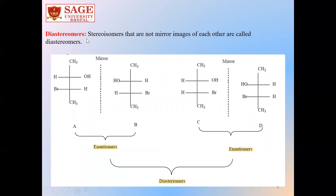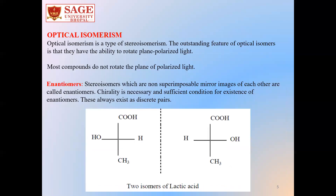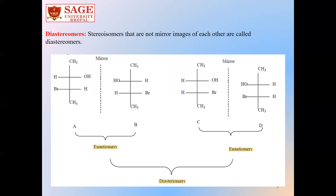The second type of optical isomers is diastereomers. These are stereoisomers that are not mirror images of each other. Here we can see compound A and compound B — they are non-superimposable mirror images. Compound C and D are also non-superimposable mirror images. So A and B are enantiomers, and C and D are also enantiomers. But A and C are not mirror images of each other, so A and C are diastereomers. Similarly, B and D are also not mirror images of each other, so they are also diastereomers. In summary: enantiomers are non-superimposable mirror images, while diastereomers are not mirror images of each other.